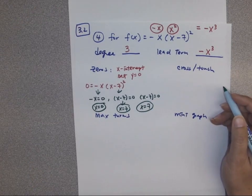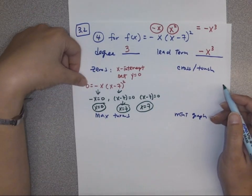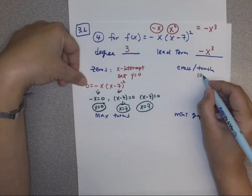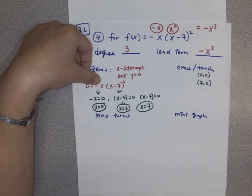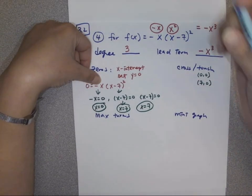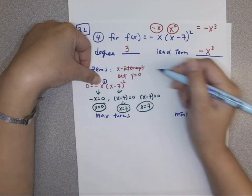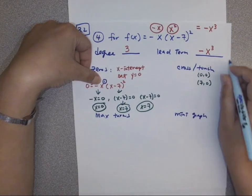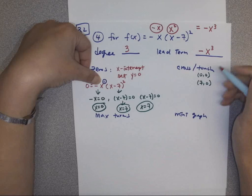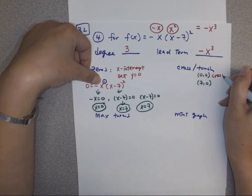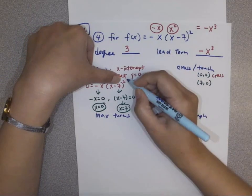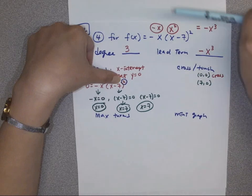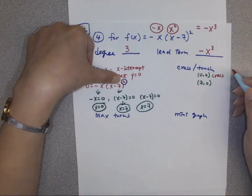For the zeros: x = 0 with degree one is an odd-power zero, so it's crossing. x = 7 with degree two is an even-power zero, so it's touching.